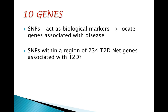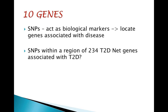In addition, they analysed whether SNPs within a region of 234 type 2 diabetes net genes were associated with type 2 diabetes in the Diagram Plus database. The 10 SNPs with the lowest p-values were included in the final ranking. Using network topology, they identified 162 genes showing significant connectivity within the protein-to-protein interaction network. Protein-to-protein interactions are of central importance for virtually every process in a living cell, and information about these interactions improves our understanding of disease. Eight genes showing correlation with more than 3 type 2 diabetes genes were included in the ranking.